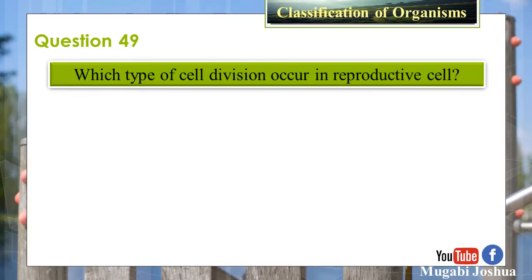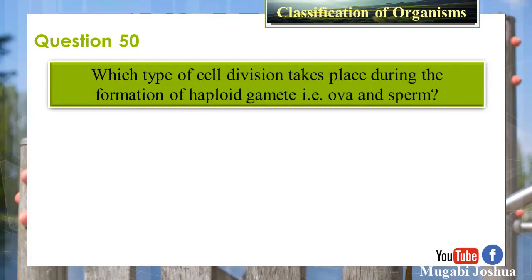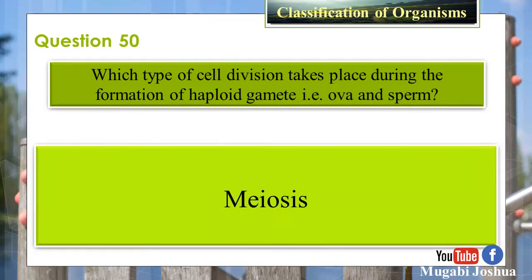Question 49: Which type of cell division occurs in reproductive cells? Answer: Meiosis. Question 50: Which type of cell division takes place during the formation of haploid gametes, i.e., ovum and sperm? Answer: Meiosis.